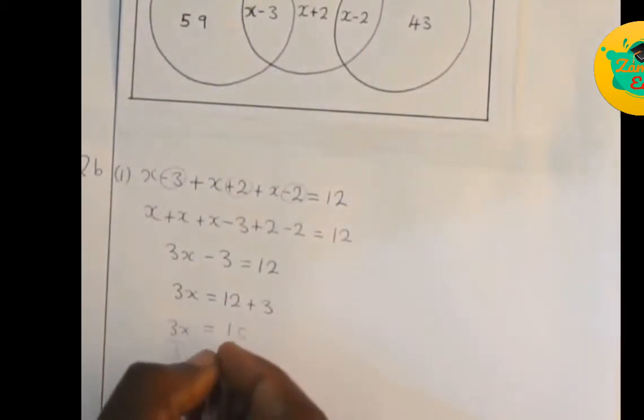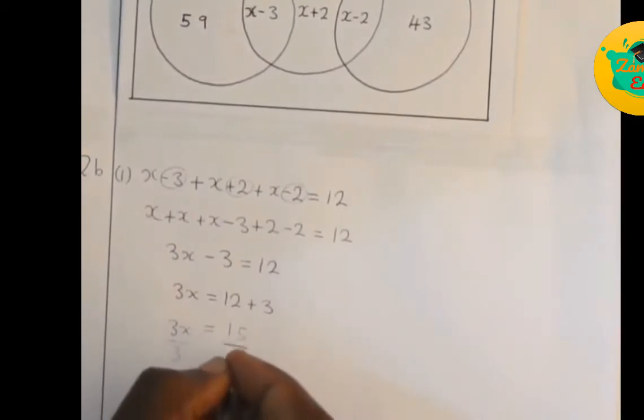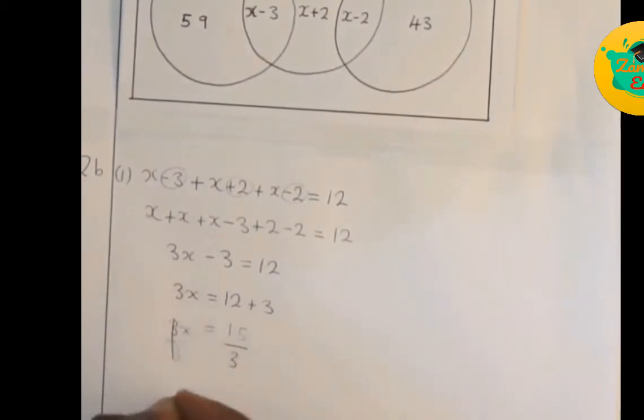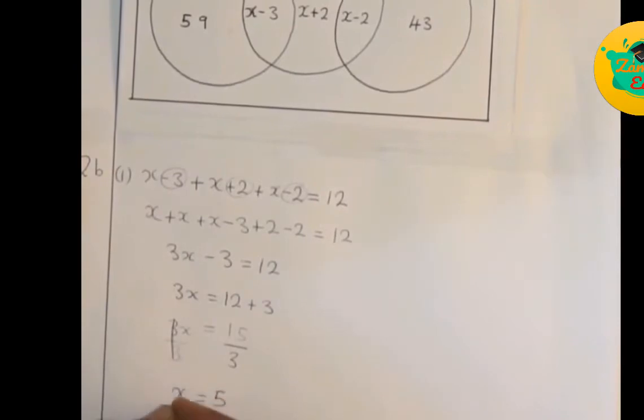We divide both sides by 3, and our value of x is equal to 5.